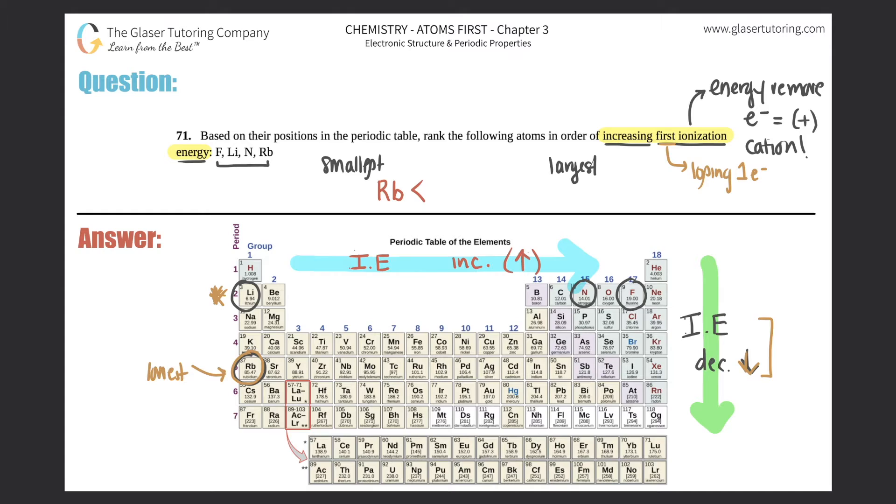Well, the trend for the period: across a period, ionization increases as you go from left to right. So that means that these have to be the highest and these over here have to be the lowest. So it makes sense that lithium comes next, and then it just keeps increasing and increasing as you go across that second period.